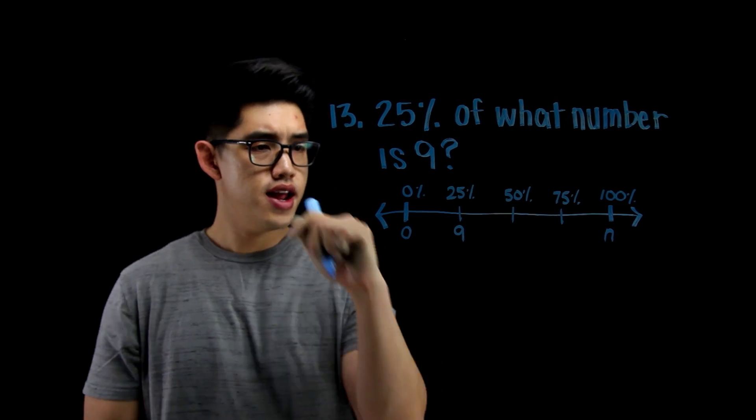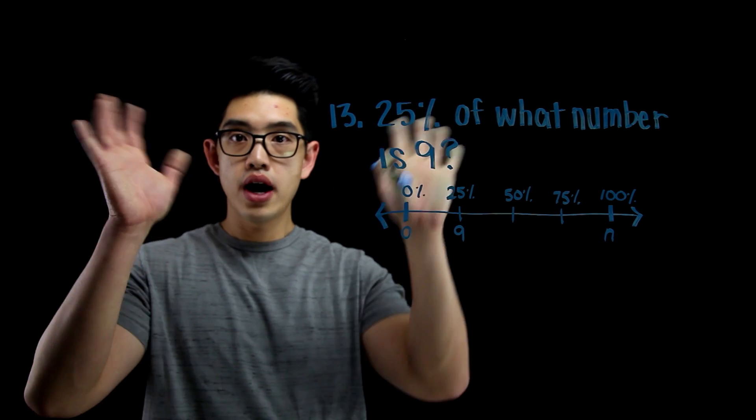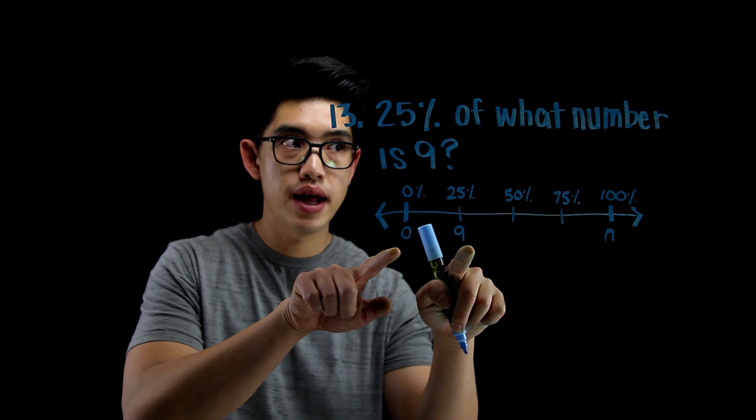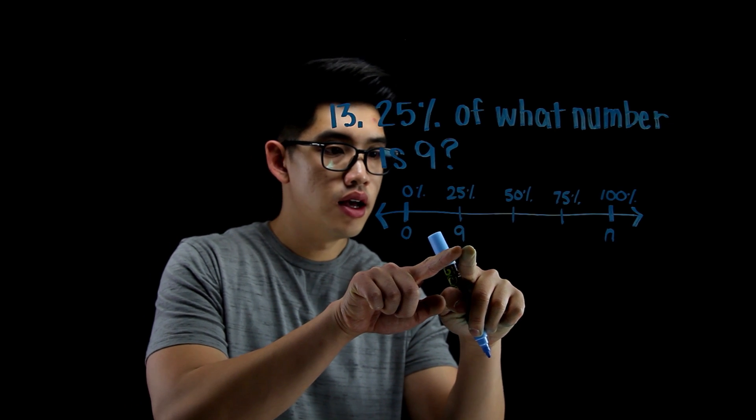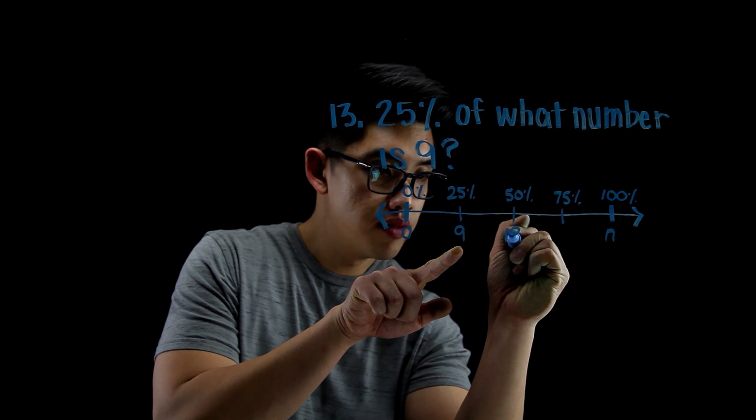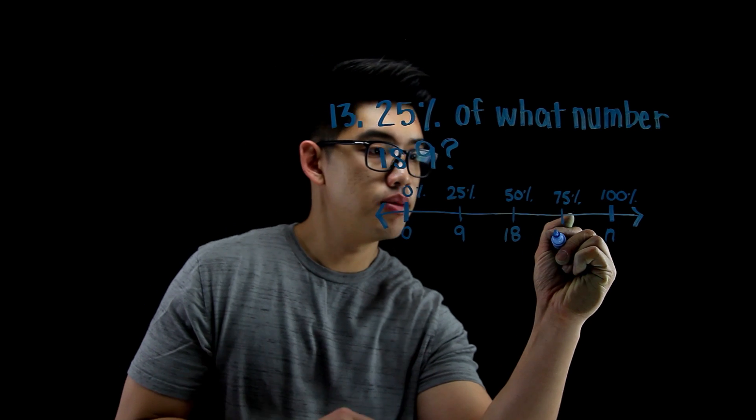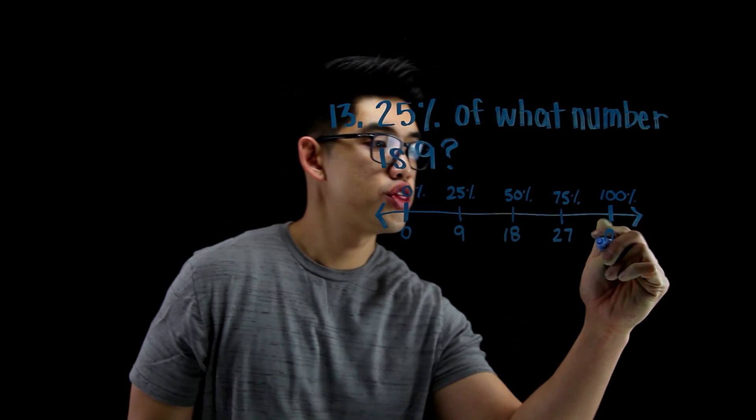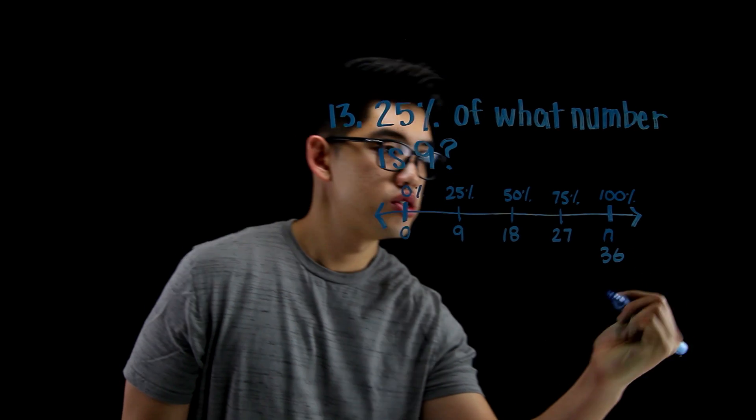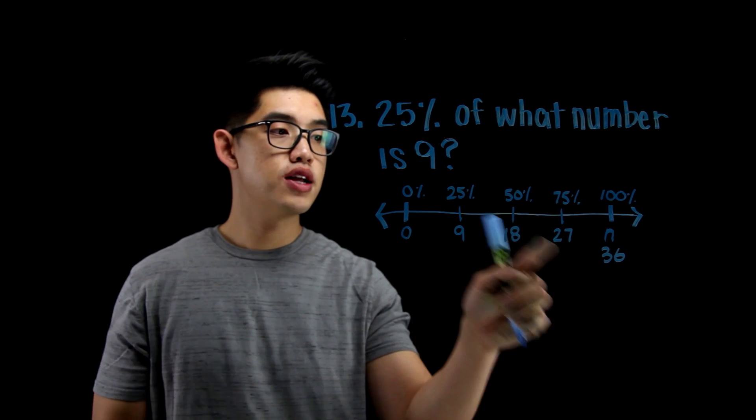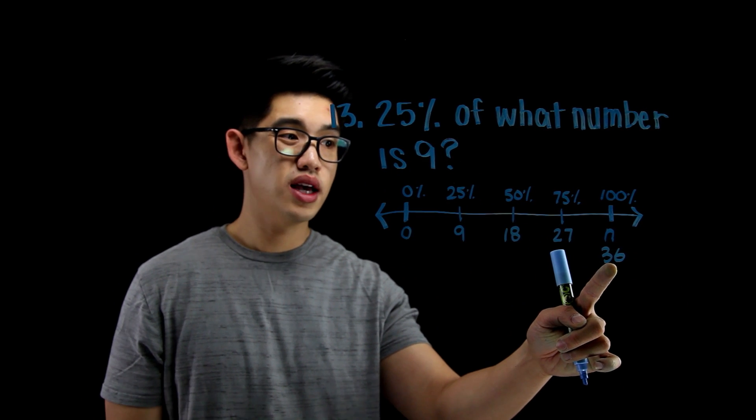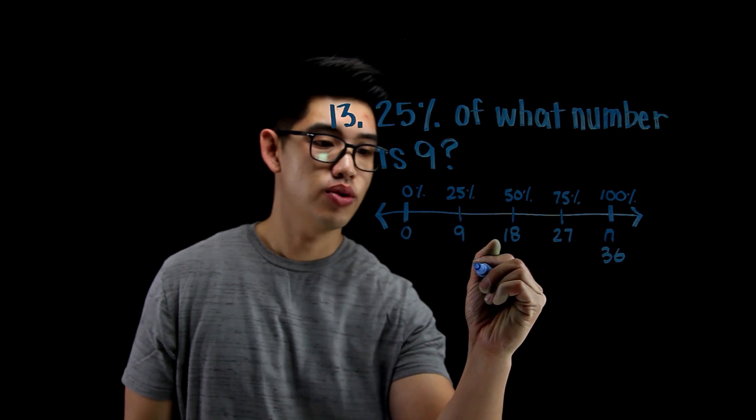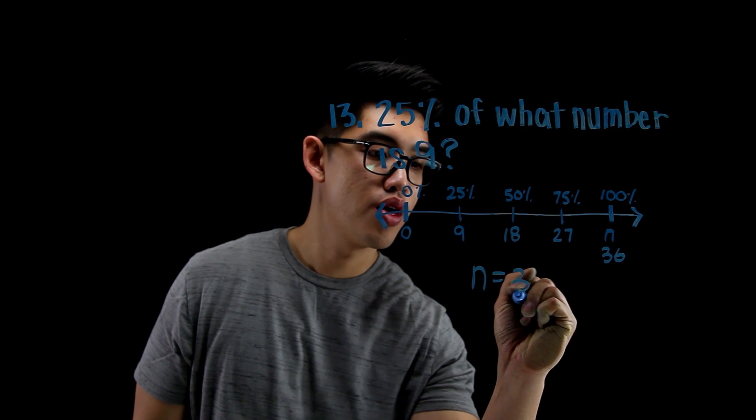And I know that 9 is 25%. I'm trying to figure out what that is right there. I know, because 0 became 9, I added 9. So if I do it again, 50% is 18. And then I can add 9 again, that's going to be 27. And then add 9 again, and that's going to be 36. So that huge number, 25% of 36, if I were to get 36 and divide by 4, like 25%, that answer is going to be 9. So n equals to 36.